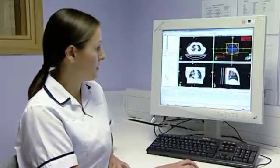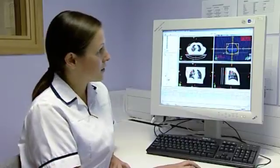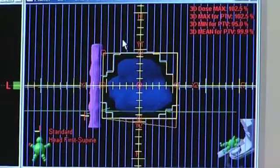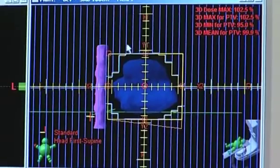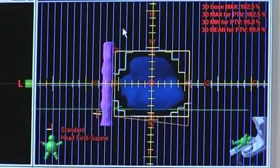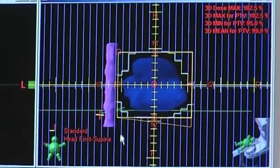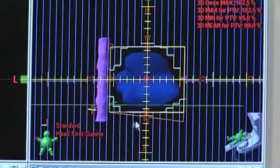As you can see here, these yellow lines and these blue lines represent the MLCs. These are one centimeter thick leaves that you can push into the field to shield out certain areas.